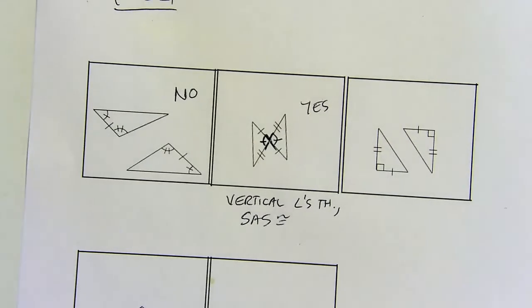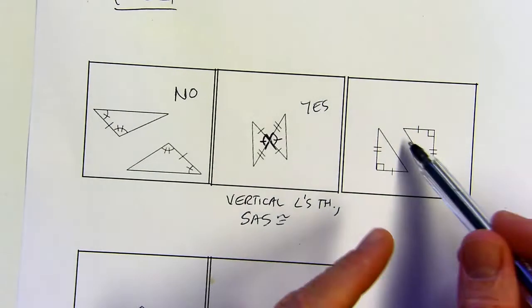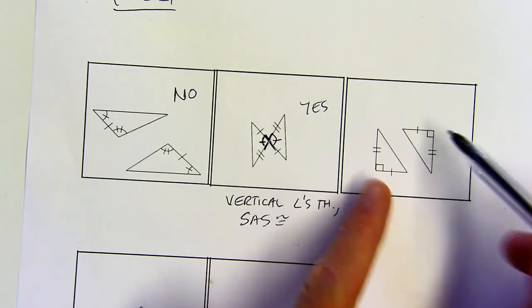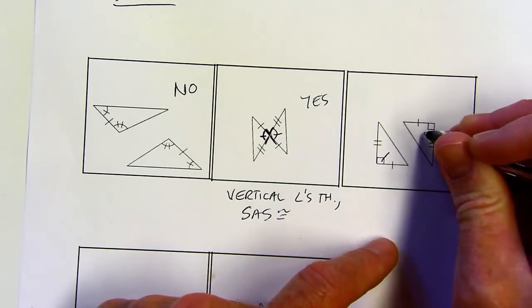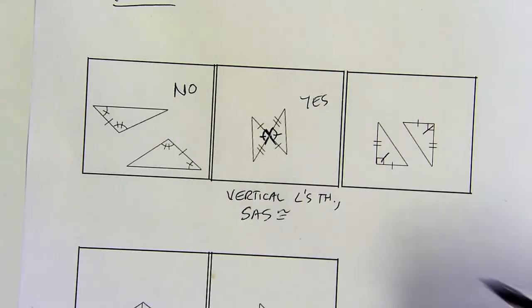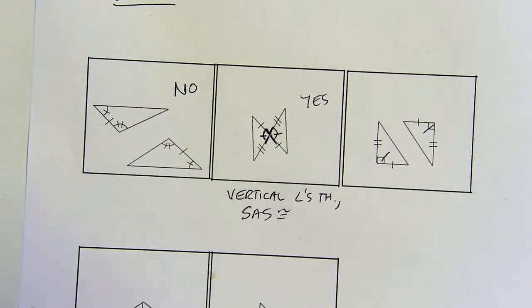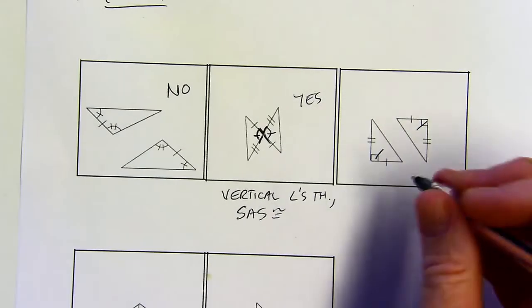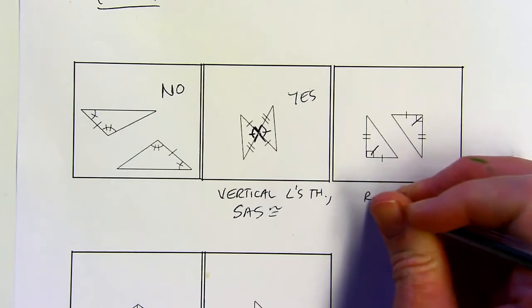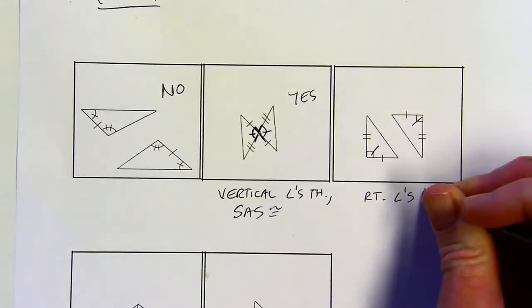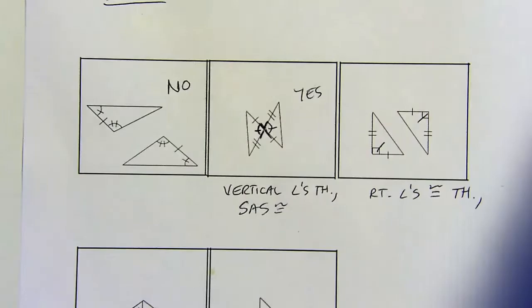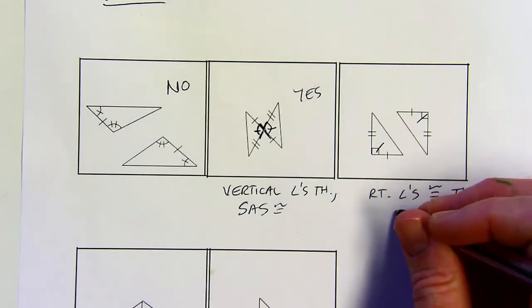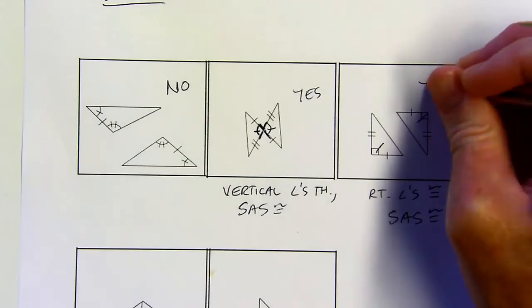In this one, it doesn't say that the right angles are congruent, but they are — all right angles are congruent. That's the right angles congruence theorem. Some teachers will want you to list that; some won't. I'm going to use the right angles congruence theorem here. Now I do have two sides and an included angle in both triangles, so I can use SAS. Yes.